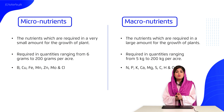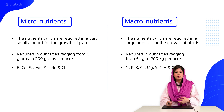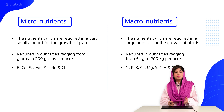When we talk about fertilizers, they provide nutrients to the soil, and these nutrients can be categorized as micro-nutrients and macro-nutrients. Micro-nutrients are those required in a very small amount for the growth of plants, whereas macro-nutrients are required in a large amount. Micro-nutrients are needed in a range of 6 to 200 grams per acre, while macro-nutrients are needed from 5 kg to 200 kg per acre.